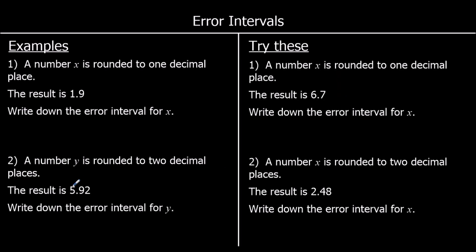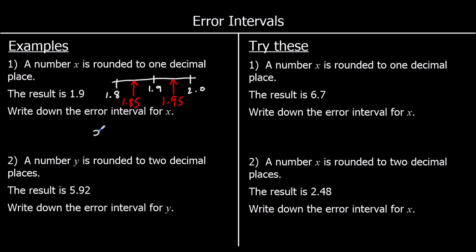Here's another example: a number x is rounded to one decimal place, and this time we have 1.9 — what's the error interval for x? To one decimal place, the one up would have been 2.0 and the one back 1.8, so we go halfway: 1.85 and 1.95. To round to 1.9 to one decimal place, it must have been between 1.85 and 1.95, so x is bigger than or equal to 1.85 and less than 1.95.